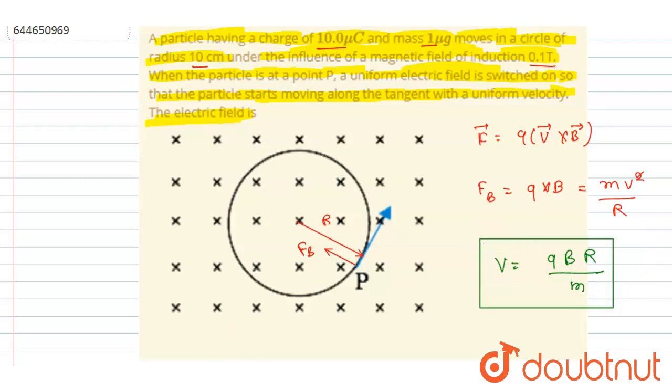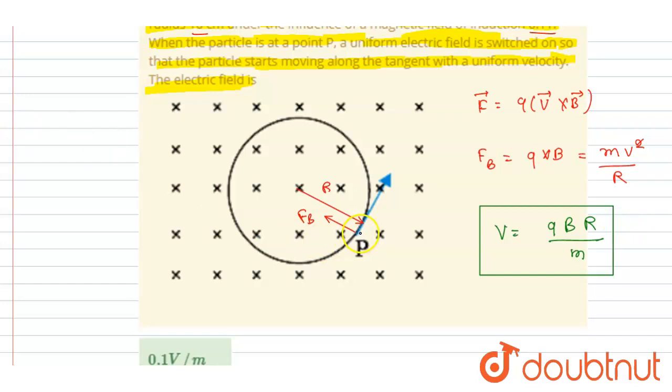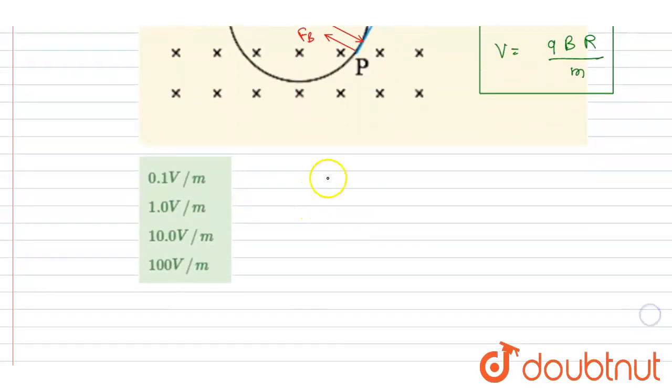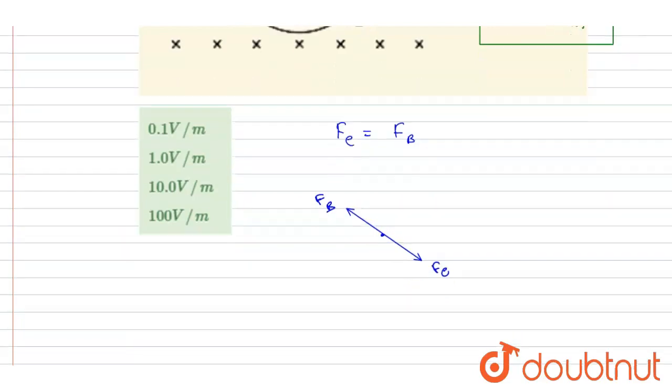And when it is at point P, the electric field is switched on. So I will write here electric force is equal to magnetic force. So what will happen at point P? The magnetic field force was acting in this direction, and electric force will act in this direction, and both will be equal, so the particle will move tangential.